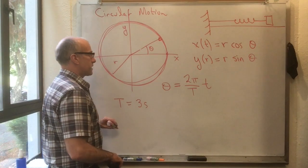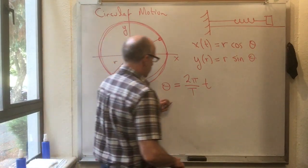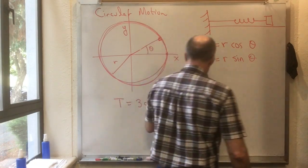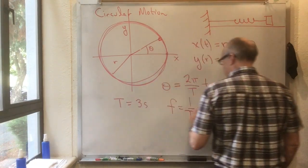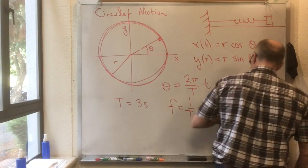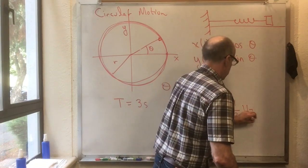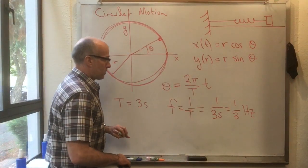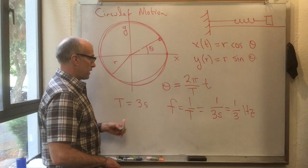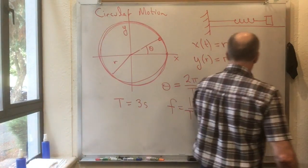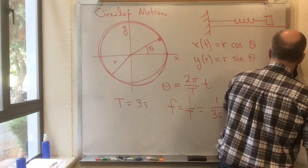Then the frequency we call 1 over t, which in this case will be 1 over 3 seconds, which is 1 third of a hertz. So another way of writing this would be to say 1 over t is f, so I could write that as theta equals 2 pi f t.